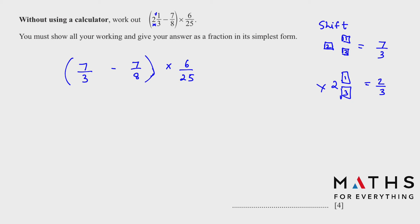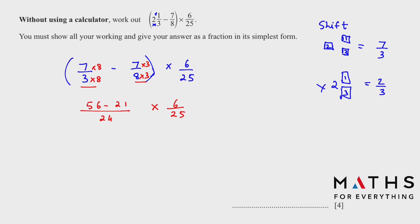For addition or subtraction, you need a common denominator. Multiply the first fraction by 8 in numerator and denominator, and the second by 3, giving a common denominator of 24. You get (56 − 21)/24. This simplifies to 35/24. Now multiply: 35/24 × 6/25.